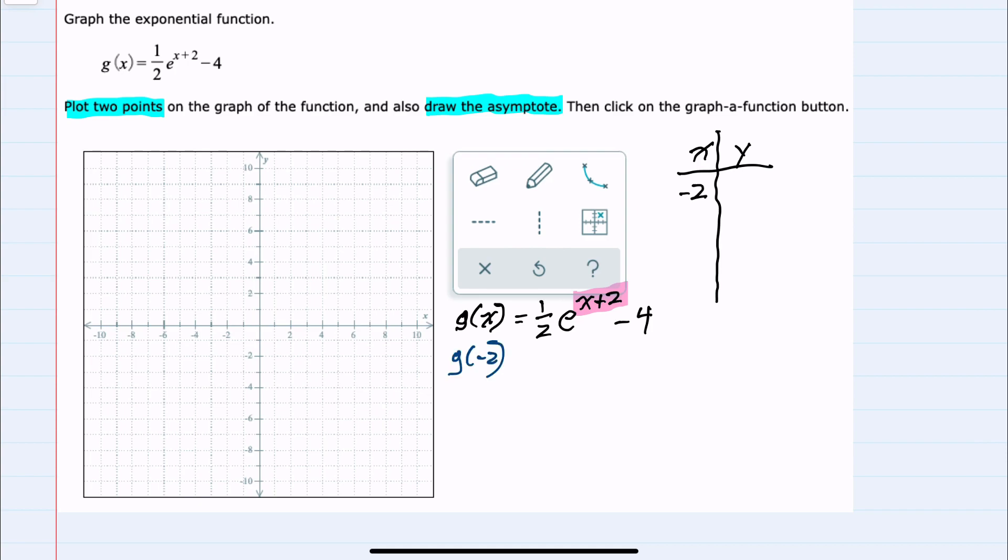That would give us g(-2) = (1/2)e^(-2+2) - 4, so e^0 - 4. Now simplifying, e^0 is one, so one half times one is one half, bring down the minus four. One half minus four would give us negative 3.5 or three and a half.